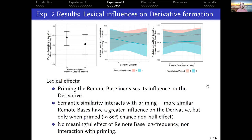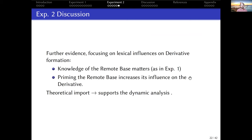Turning to the lexical influences on derivative formation in experiment two: we find a priming effect such that if the remote base is primed, the derivatives of that local base are less likely to be faithful to the local base. We also find an interaction of priming with semantic similarity such that more semantically similar remote bases exert more of an effect on the derivative — but only if they're primed. This explains why we didn't see that semantic similarity effect in experiment one. We see a null result for remote base log frequency.